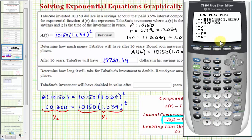And now before we press graph, we do have to set up the window, and notice because we're looking for a function value of 20,300, we'll have to have a Y maximum that's more than 20,300. And notice after 16 years, the account balance was $18,720.39, and therefore the horizontal axis, or X maximum, will have to be more than 16.